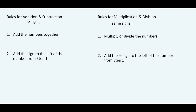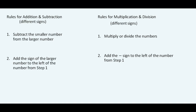When the signs are different for addition and subtraction, you subtract the smaller from the larger, and then the result gets the sign of the larger fraction or number. For multiplication and division, when the signs are different, you multiply or divide as usual, but the result will always be negative.